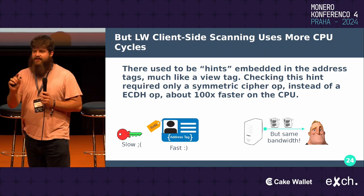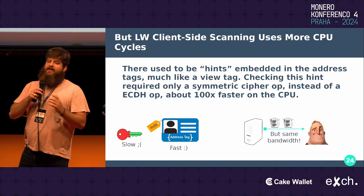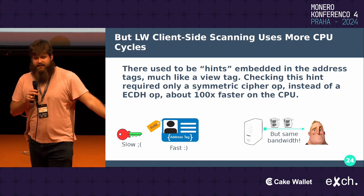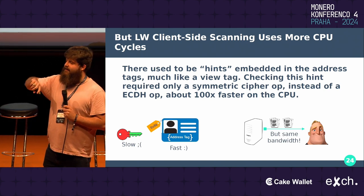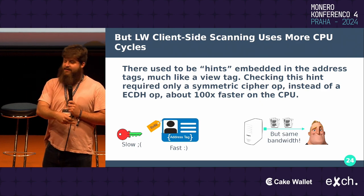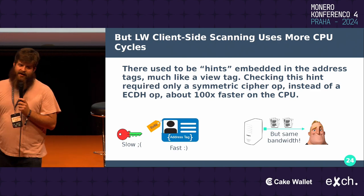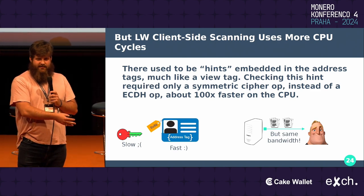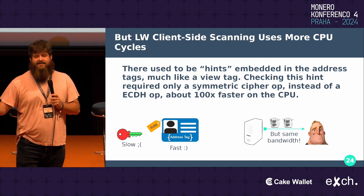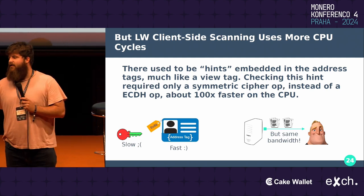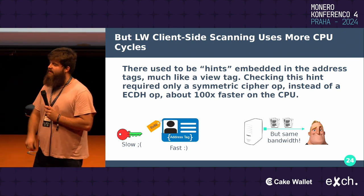In the old address tags there's a little thing called a hint, and we want to replace that and add a new view tag that makes sure we get view tag lists that skip a lot of operations and optimize things. Because the LightWallet server doesn't know the view tags anymore, it cannot check that for us and we have to do an ECD exchange instead of a cipher operation, which on the client side is about 100 times slower. But since the bandwidth was already about 100 times lower, old Jamtis is about 100 times slower than that — still about 100 times faster than a normal wallet, but that's a trade-off to keep in mind.